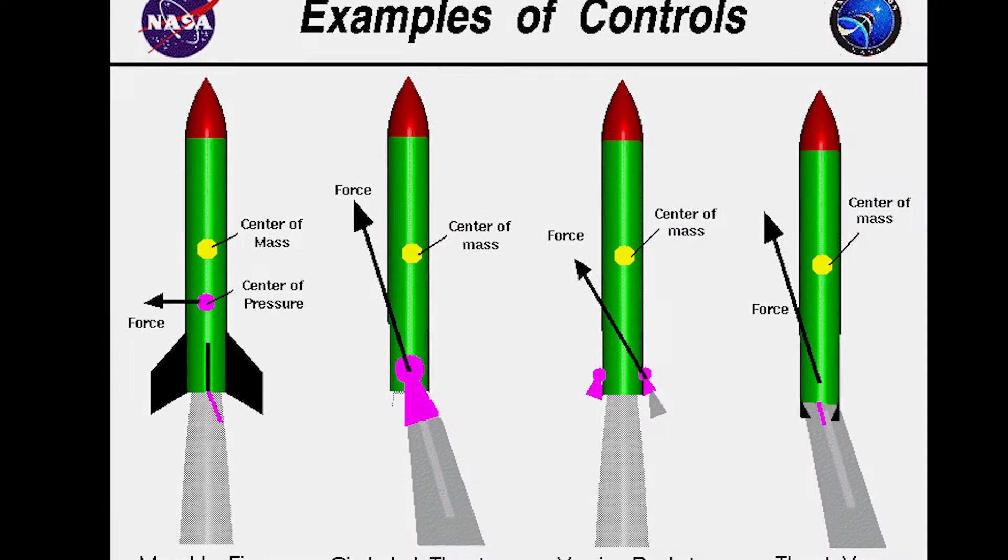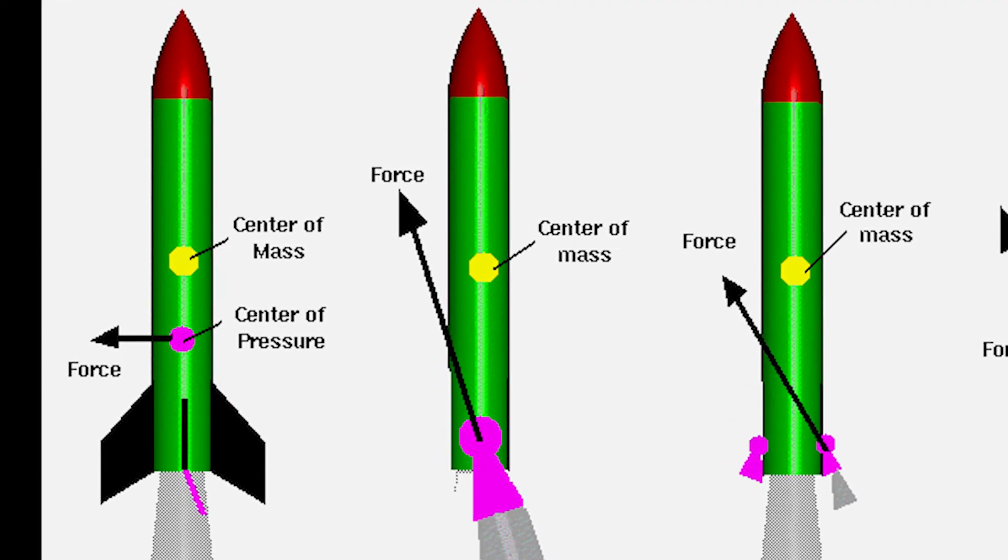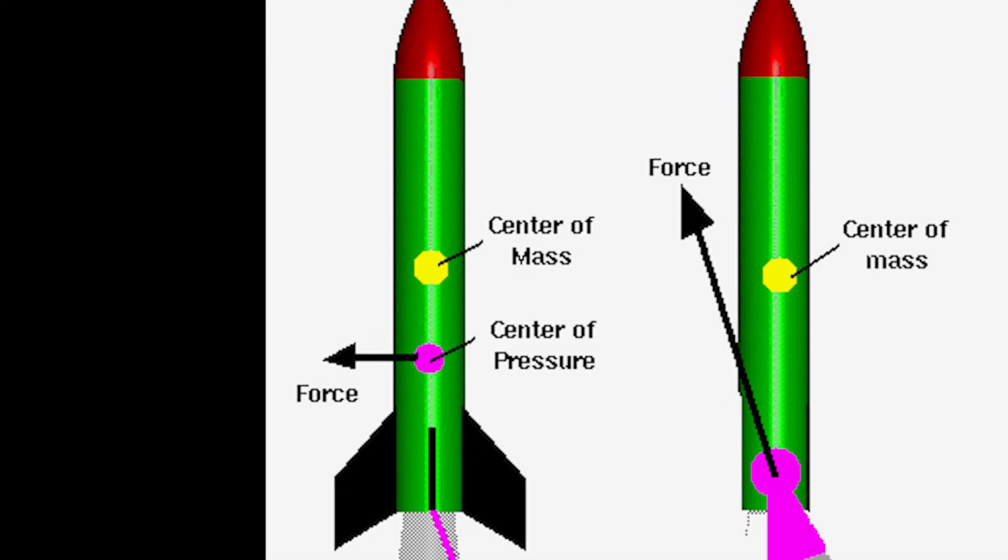Fortunately, ensuring stability when traveling through the atmosphere is relatively easy if two things are remembered: center of mass and center of pressure. Center of mass is the balance point of a rocket. Center of pressure is the balance point of the pressure exerted on the surface of the rocket by air molecules as it flies through the air.